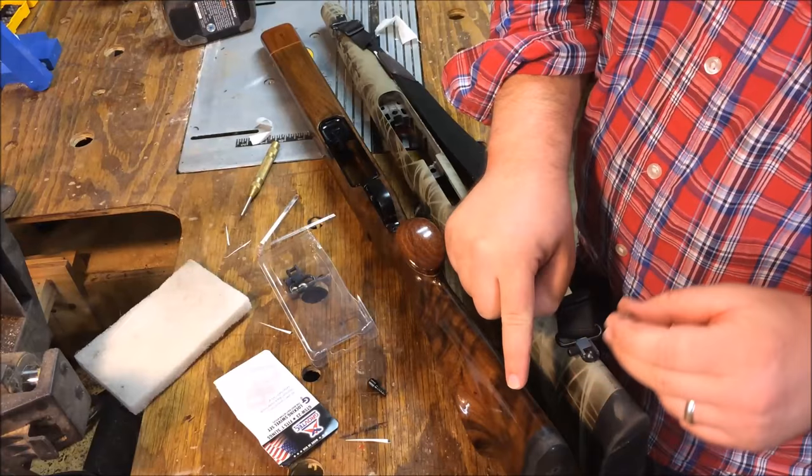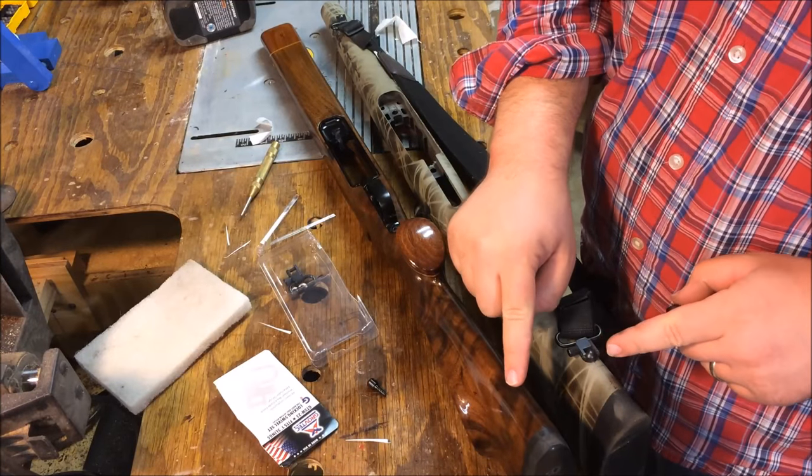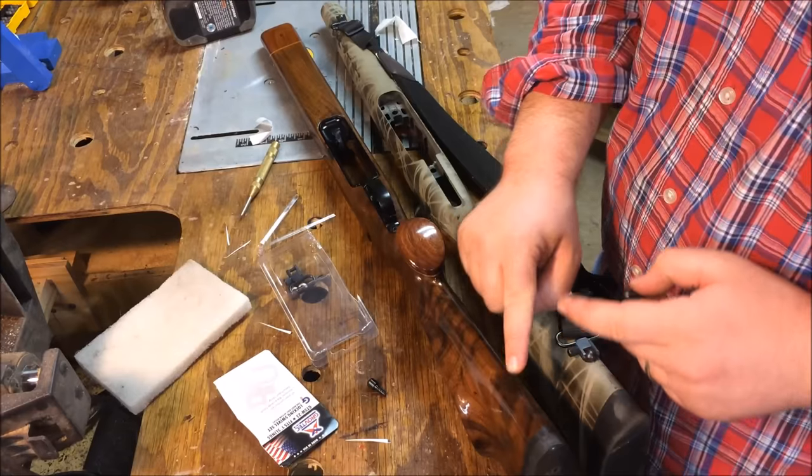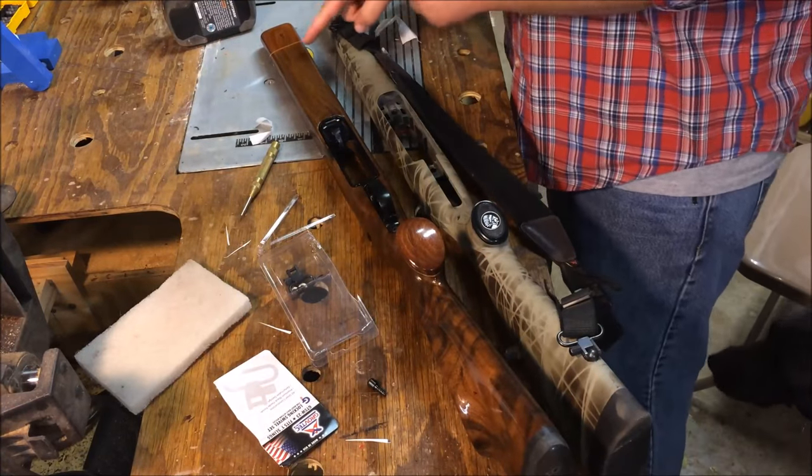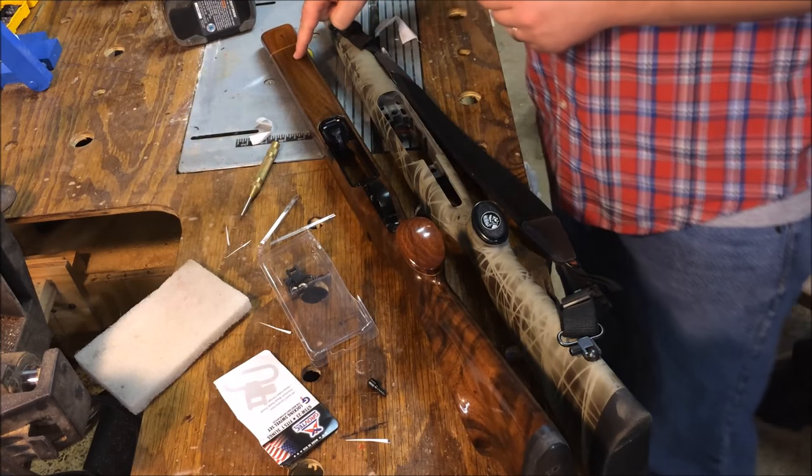So you can see it's got the slings already in place. That one is about right here, about an inch up. I'm going to do about two inches up from the recoil pad, and this one I think I'm going to do an inch down from my forend tip.